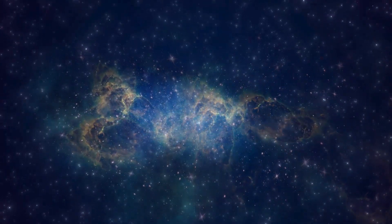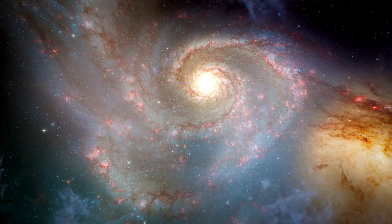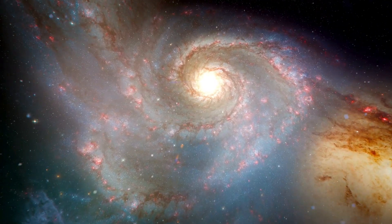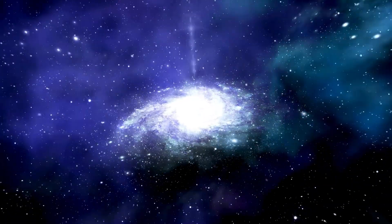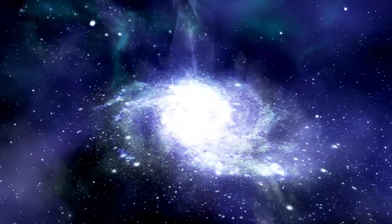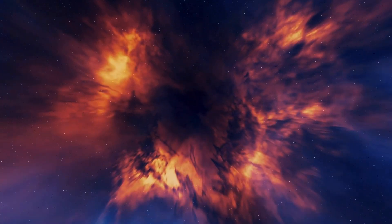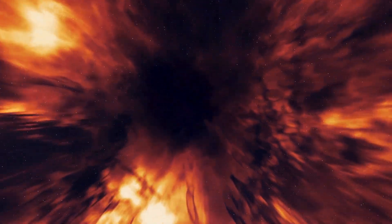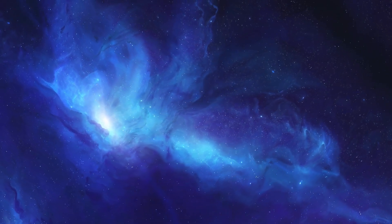Betelgeuse, also referred to as Alpha Orionis, is typically the 10th brightest star in the night sky and the 2nd brightest star in the Orion constellation, indicating the hunter's right shoulder. This red giant star is unique among the prominent stars in Orion, which are mostly bright young blue giants or supergiants. Along with stars like Rigel and the Orion Nebula, it creates a visually stunning celestial image in our Milky Way galaxy.